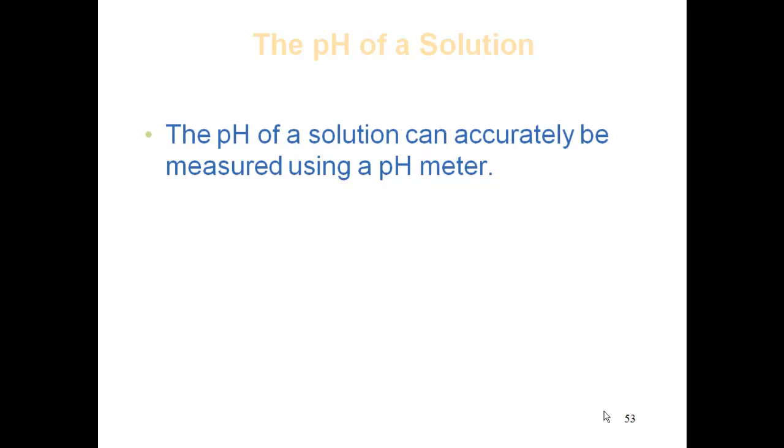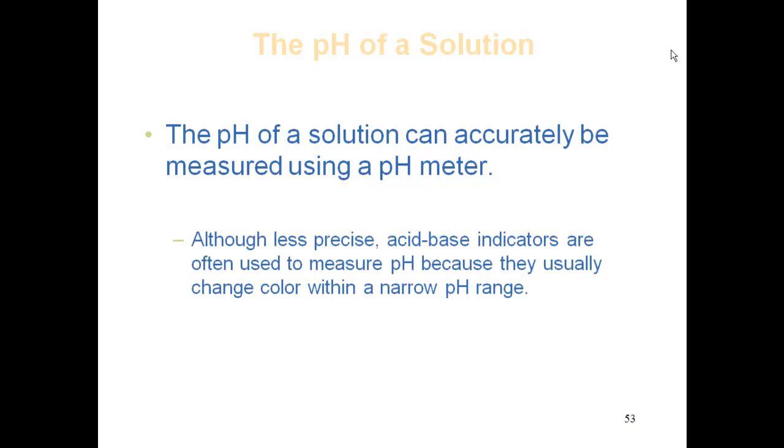There are other ways that are less precise and accurate to determine the pH of something. We use pH paper. If you own a pool, you take paper, dip it in the water and compare the color code to figure out the pH.